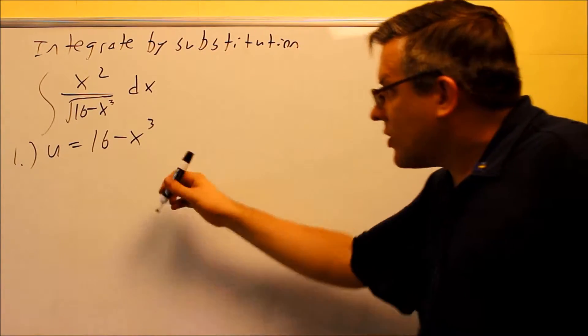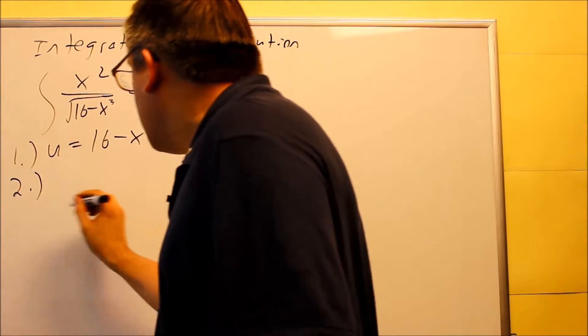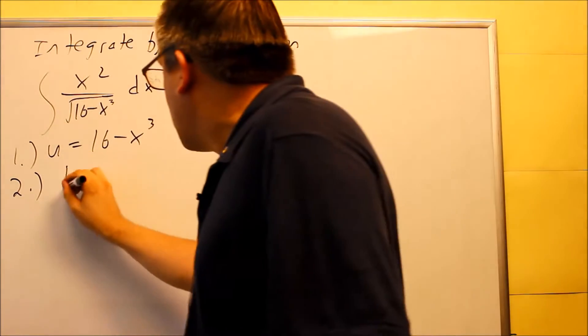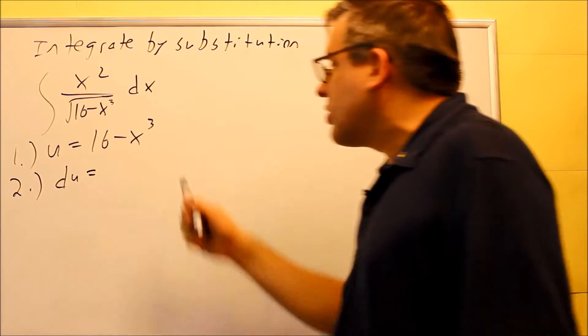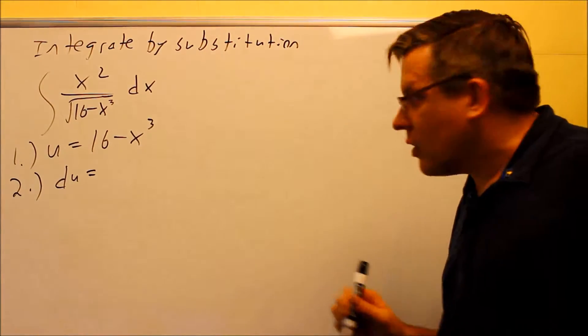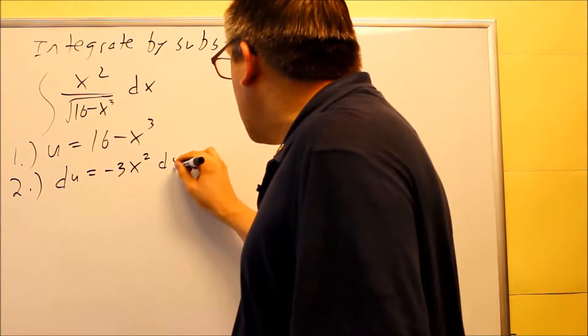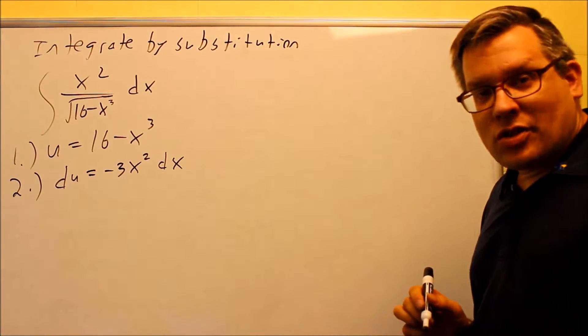We're going to take the derivative of both sides, that's going to be our step number two. So we're going to take the derivative of both sides, on the left-hand side we'll get du always, on the right-hand side we're going to take the derivative of this, you're going to get negative three x squared, and then don't forget about the dx over here on that side.